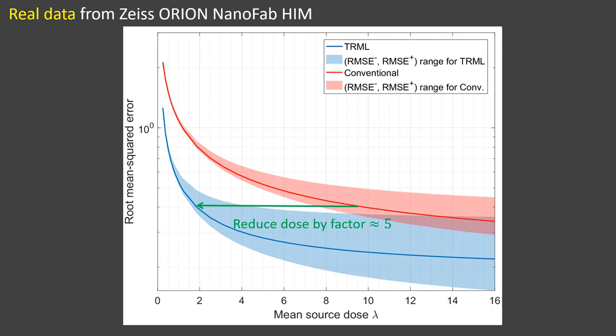We've also plotted the root mean square error as a function of total dose lambda for real experimental data. Note that by applying time-resolved measurements, we tremendously reduce source dose by a factor of 5 for a fixed root mean square error.